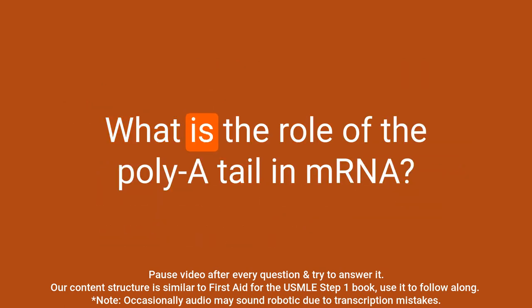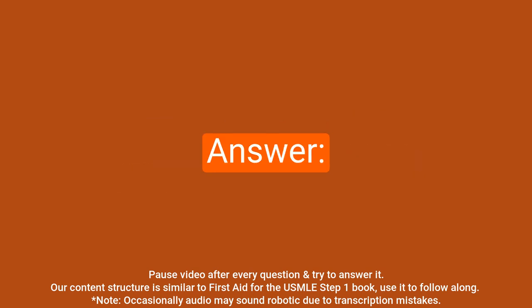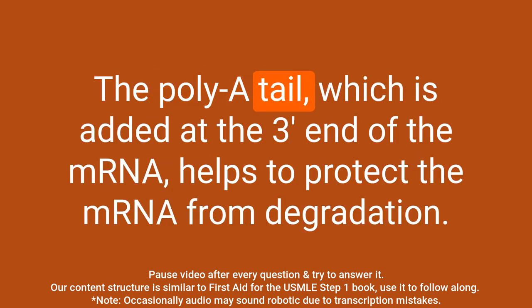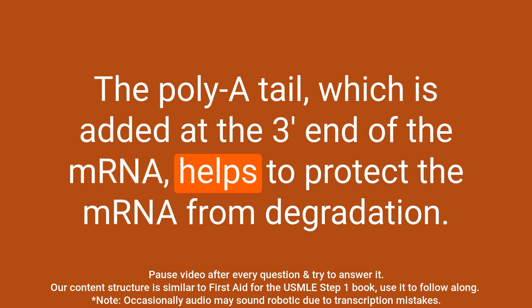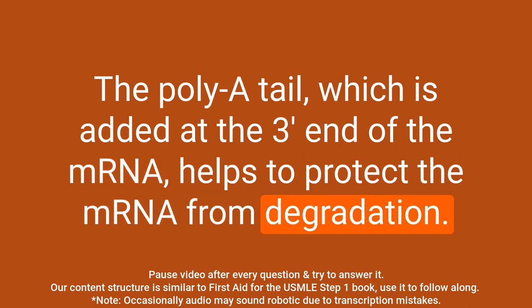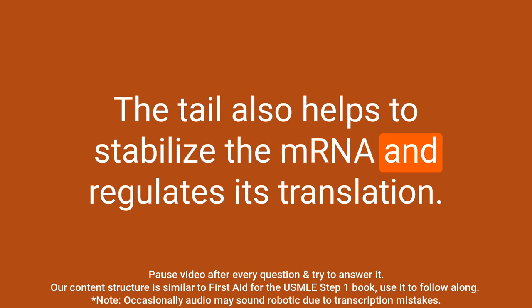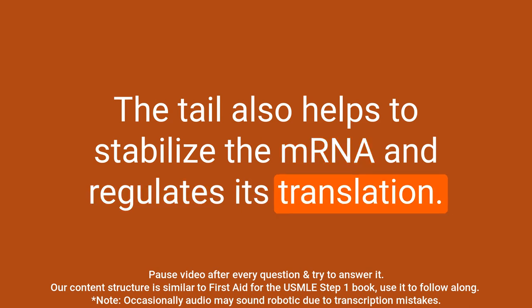Question: What is the role of the poly-A tail in mRNA? Answer: The poly-A tail, which is added at the 3' end of the mRNA, helps to protect the mRNA from degradation. The tail also helps to stabilize the mRNA and regulates its translation.